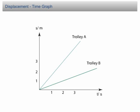Displacement time graph. The displacement time graph tells how the displacement of a moving object varies with time. Look at this example. This is a displacement time graph illustrating the motion of two trolleys. We can tell the time and displacement of the trolleys easily from the graph. For example, at time t equal to 2 seconds, the displacement of trolley B is 1 meter and displacement of trolley A is 3 meters.